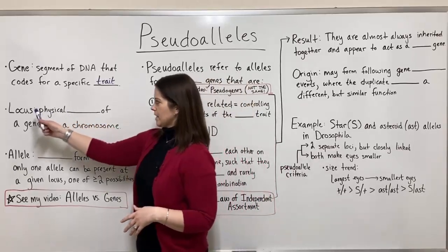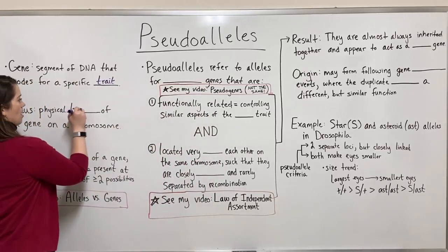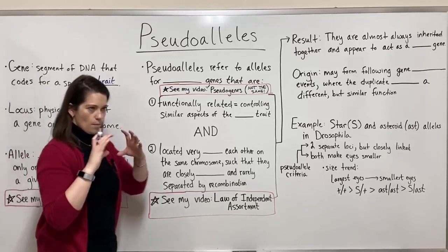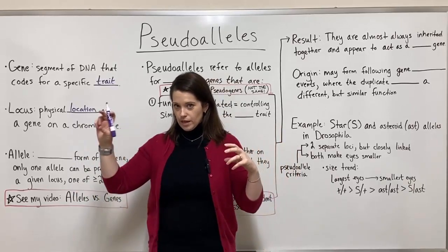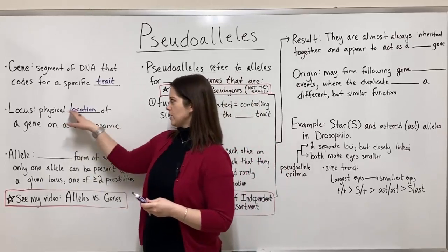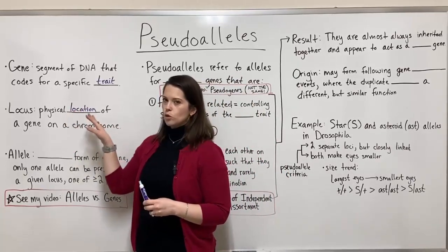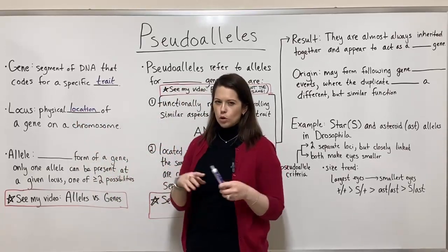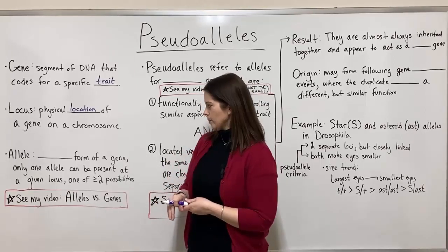The locus is the physical location of a gene on a chromosome. So if you're looking at a map of a chromosome, you can see that this gene is located here, and this one is located here. The plural of locus is loci, spelled L-O-C-I.